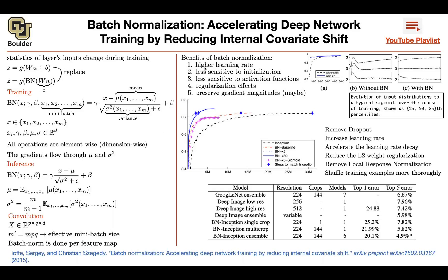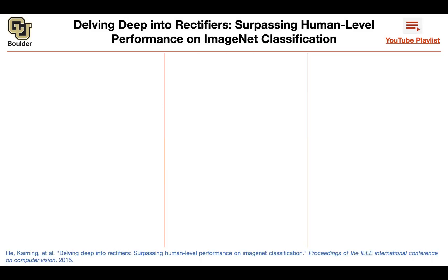These are all good properties of batch normalization: you can increase your learning rate, meaning your model learns faster; you're going to be less sensitive to initialization, so you don't have to worry too much about how you initialize your network or what activation function to use; it's going to have a regularization effect, meaning you're not going to memorize your training data and you'll be able to generalize to your test data; and it helps preserve gradient magnitudes, which is helpful during backpropagation — your gradients are not going to vanish or explode.